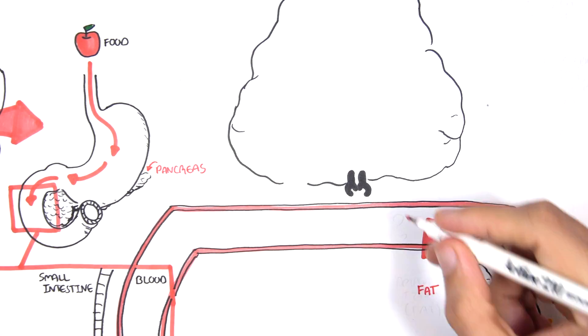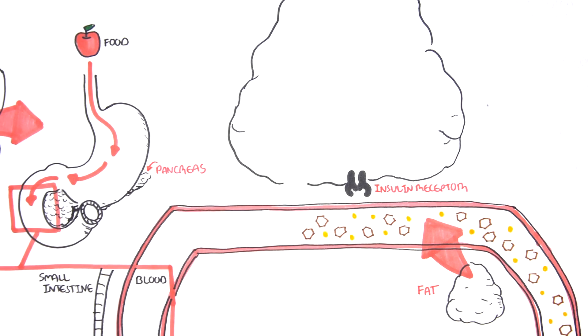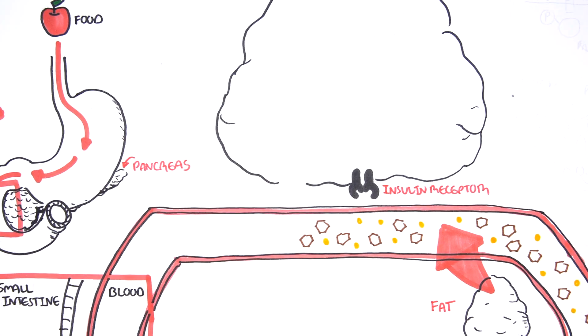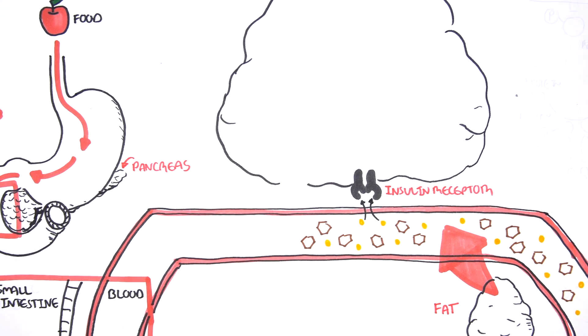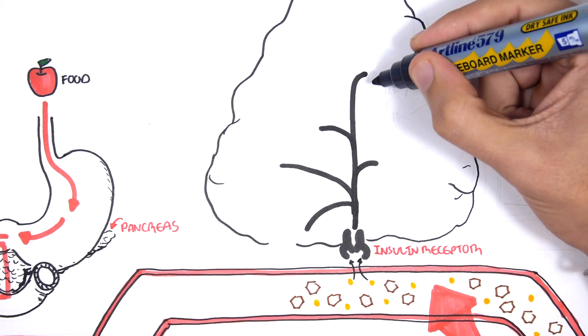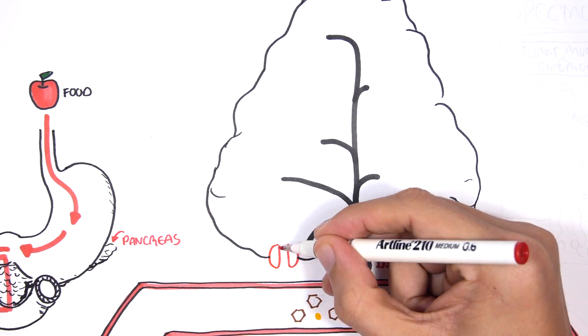The fat cells have insulin receptors on its cell surface. Insulin binds to these receptors in a very precise way, which triggers a sequence of events to occur inside the cell. A cascade of events, which will lead to a number of outcomes.